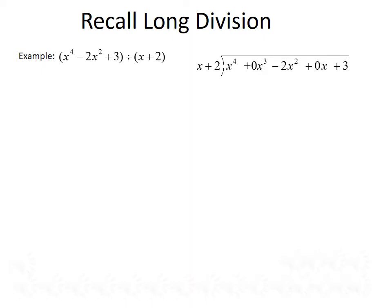What we want to do is ask ourselves: what would we multiply the first term of the divisor by to get the first term of the dividend? What do we have to multiply x by to get x to the fourth? That would be x cubed. So we do that multiplication — x cubed times x plus 2 — and write the result underneath the dividend. X cubed times x plus 2 gives us x to the fourth plus 2x cubed, and we subtract that from above. X to the fourth minus x to the fourth gives us 0, and 0x cubed minus 2x cubed gives us negative 2x cubed.